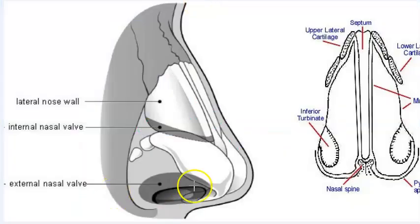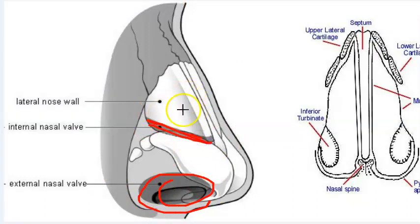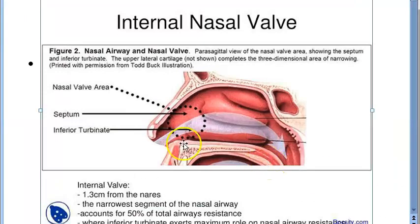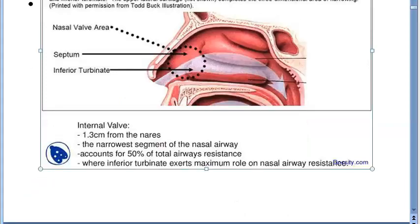Some terminology refers to this as the external nasal valve, while internally you have a different structure. It is the lower end of the upper lateral cartilage. Looking at this photo here, the nasal valve area is 1.3 cm from the nares, and it is the narrowest segment of the nasal airway.